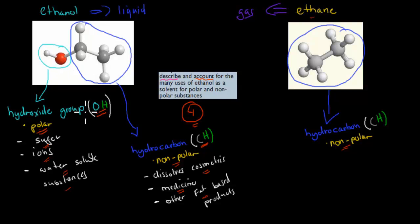Because of this hydroxide group, it's liquid. Obviously, if you want to dissolve something, you have to be liquid. Whereas ethane is actually a gas, so ethane can't dissolve anything because it's a gas. Whereas ethanol is liquid, and it has both these two groups, which make a perfect solvent.